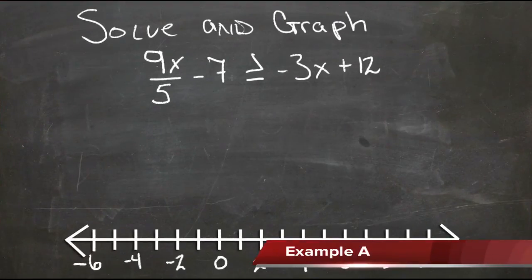Solving inequalities that require multiple steps, we just need to follow the order of operations in reverse as we're undoing things just as we would if it was an equation. So we'll collect the variables on the side that starts with the most over here by moving this negative 3x to the left, and we'll get rid of the numbers that are on that side by moving the 7 to the right.